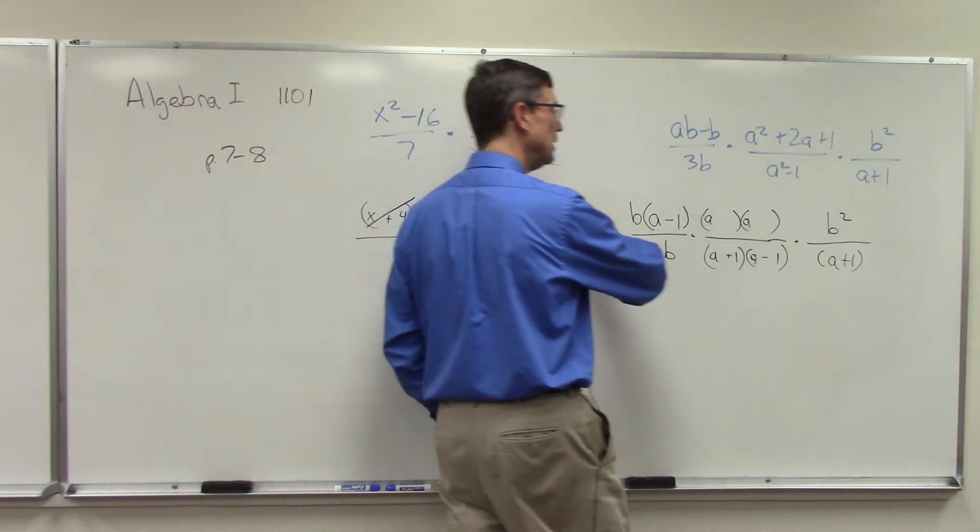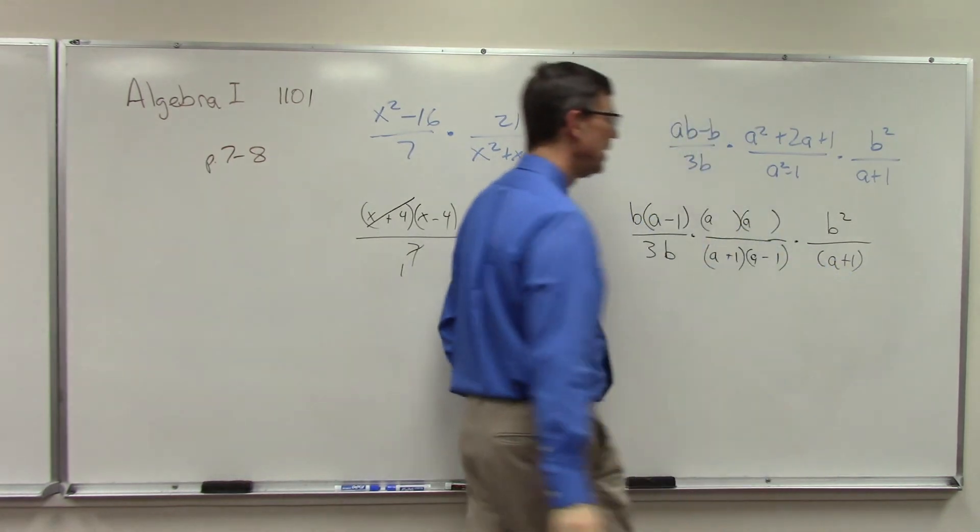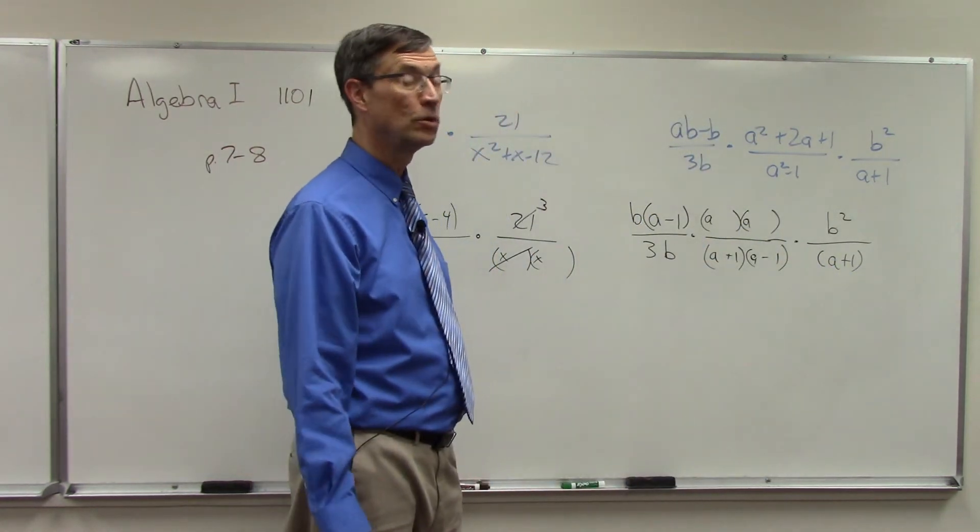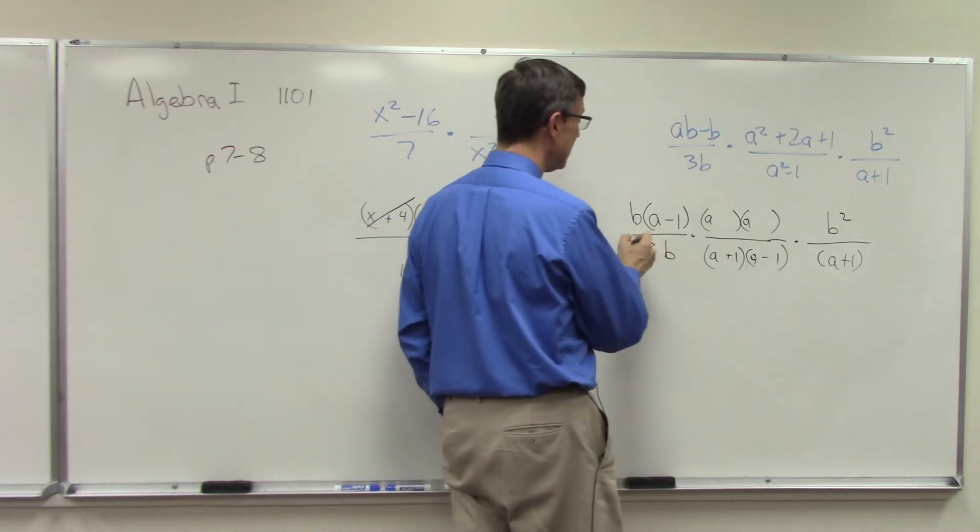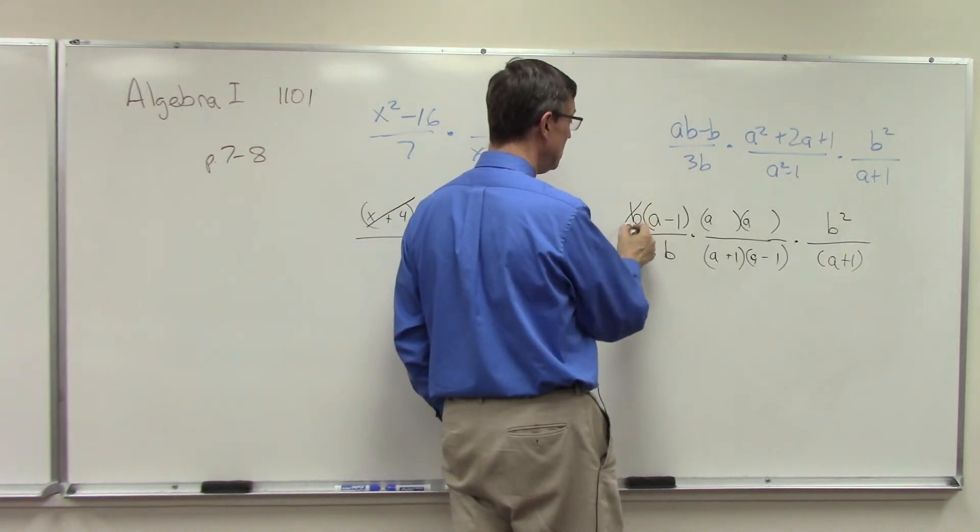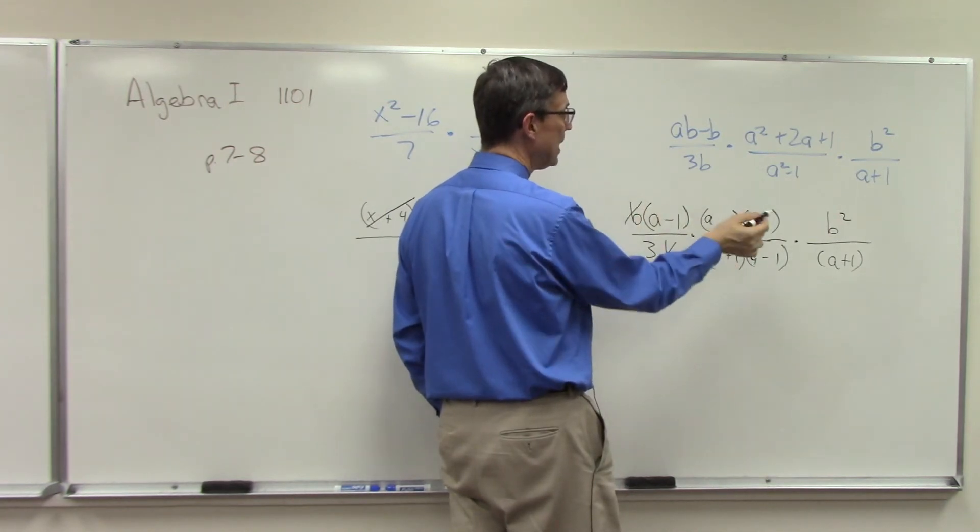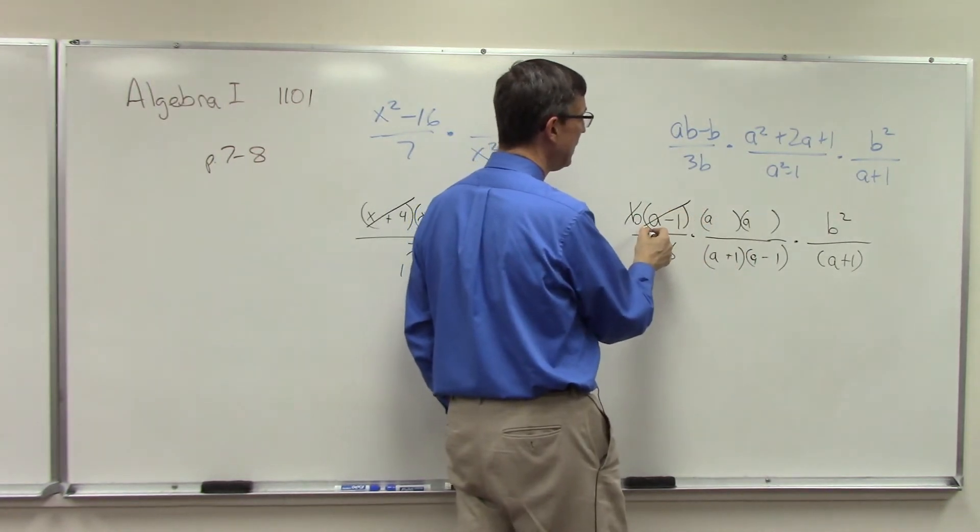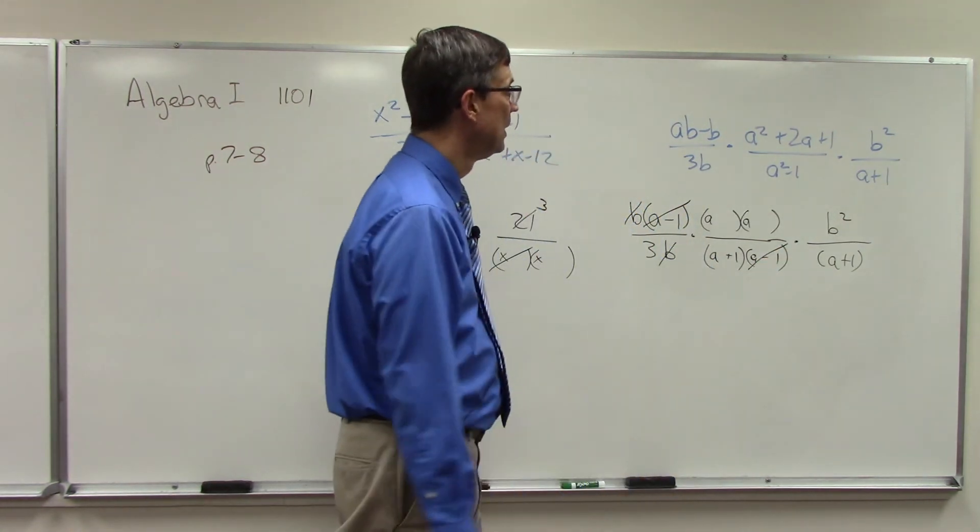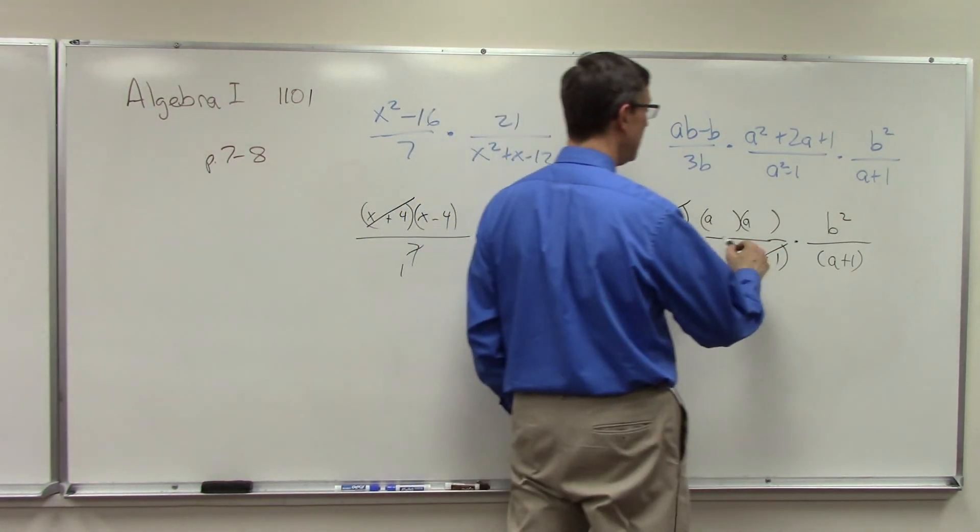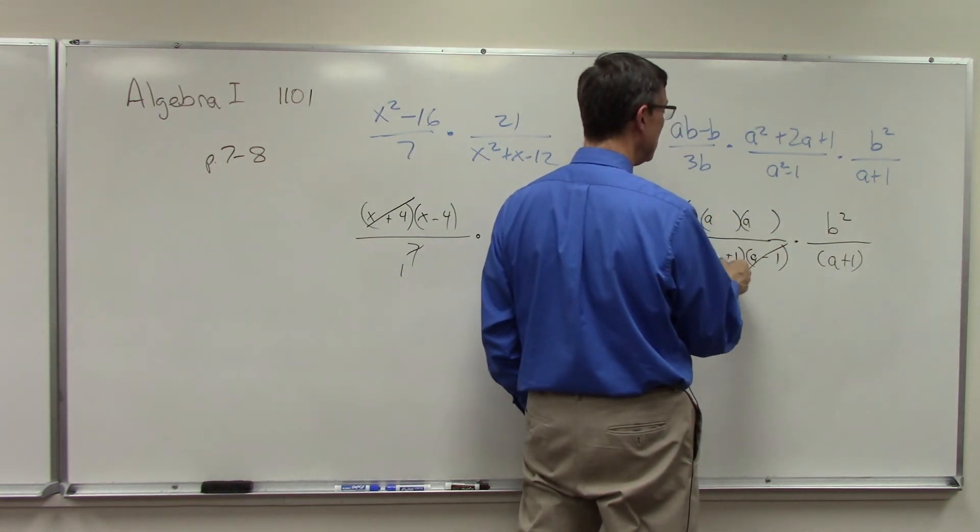Okay, now we can take the entire top compared to the entire bottom and cancel anything on the top against something on the bottom. So I can cancel this B against this B. Okay, from what I have here already, I know that I have A minus 1 here and I had an A minus 1 here, so those will cancel. And maybe an A plus 1 will cancel against something here, or maybe this will cancel.